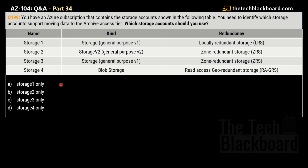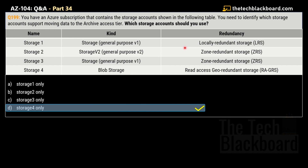The options are: A — Storage 1 only, B — Storage 2 only, C — Storage 3 only, D — Storage 4 only. The correct answer is option D, Storage 4 only. The reason is that only storage accounts configured for LRS, GRS, and RA-GRS support moving blobs to the archive tier. Storage 4 is a Blob Storage kind with Read-Access Geo-Redundant (RA-GRS) redundancy, which fits the requirement.